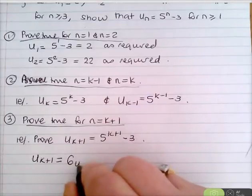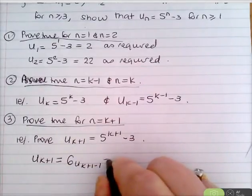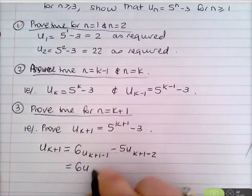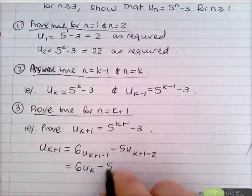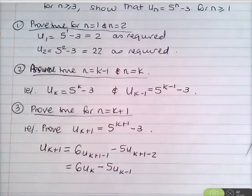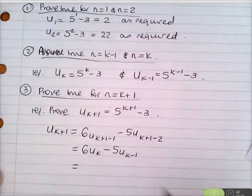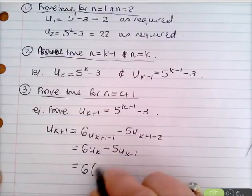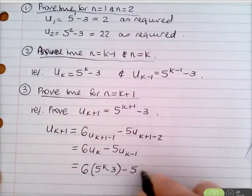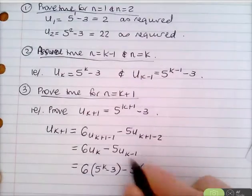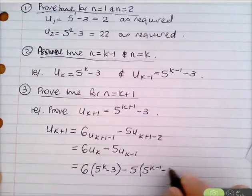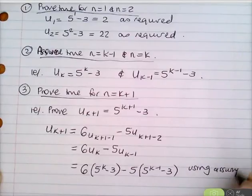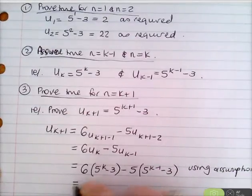So u_{k+1} = 6u_k − 5u_{k−1}. Using our two assumptions, u_k = 5^k − 3 and u_{k−1} = 5^{k−1} − 3, we substitute to get 6(5^k − 3) − 5(5^{k−1} − 3).